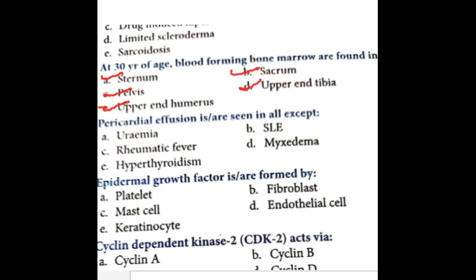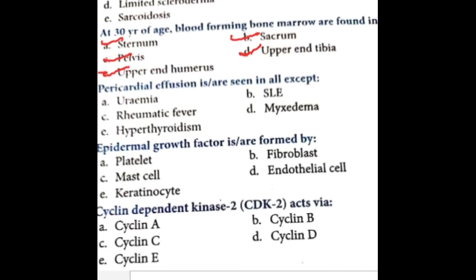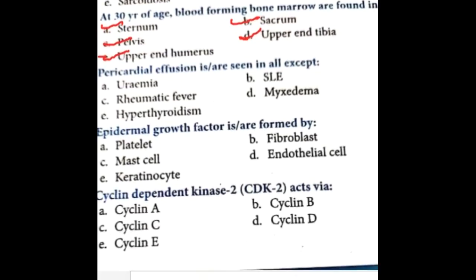Pericardial effusion is seen in uremia, SLE, rheumatic fever, and myxedema. In uremia, SLE, rheumatic fever, and myxedema you will see pericardial effusion, whereas hyperthyroidism is not associated with pericardial effusion.